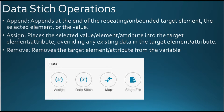In the data stitch action, you can see multiple operations. The first one is append, the second is assign, and the third is remove. Append means you can combine two payloads and assign them to a global variable — it appends to the end of a repeating target element. Assign activity lets you assign a value, element, or attribute into a target element or attribute, or override any existing data in the target element. And you can remove a target element from the variable using the remove operator.